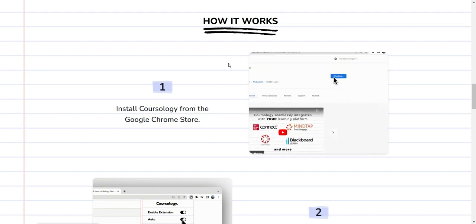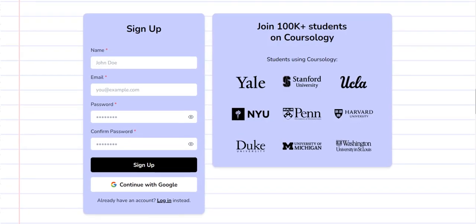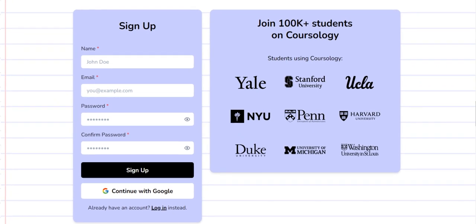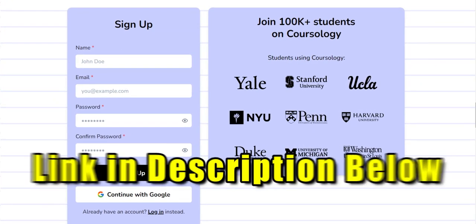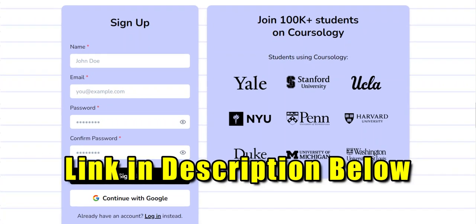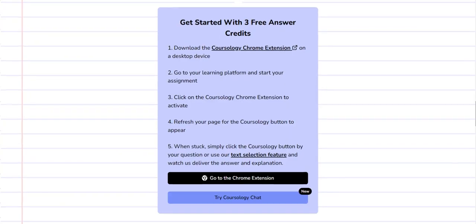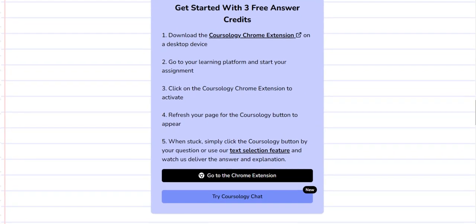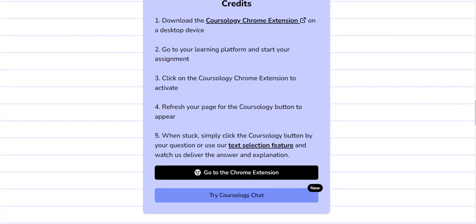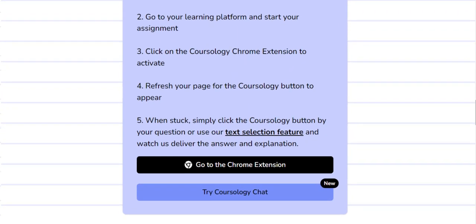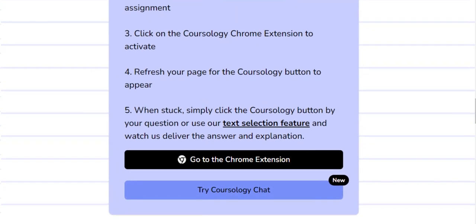It's very simple. First of all, you will need to create an account with Corsology. Like I said, I'll drop the link to create an account with them in the description below. Once you create an account, they will provide you with a link to download their Chrome extension. Once you click on the link, you go to the page for the Chrome extension and you download it and it will be added to your Chrome extension.